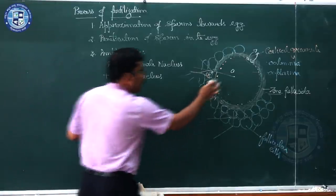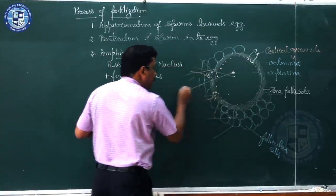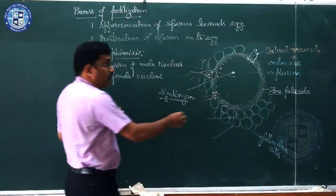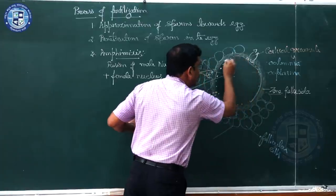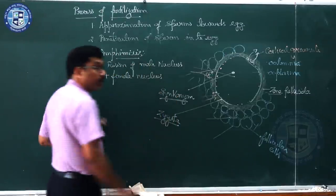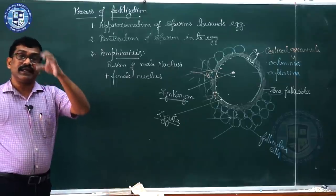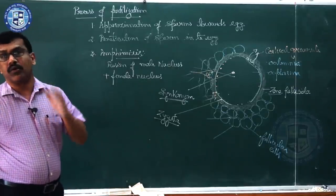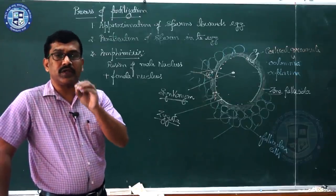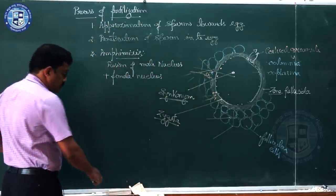The third event is amphimixis — the fusion of the male nucleus (sperm nucleus) and the female nucleus (egg nucleus). This results in a diploid nucleus called the syncarion. The egg containing the syncarion is now known as the zygote. As studied in chapter one, the zygote is always a diploid unicellular structure.